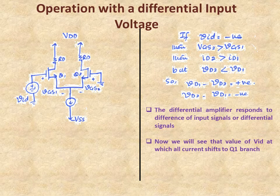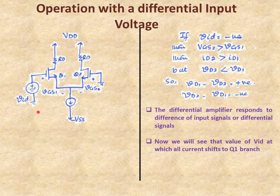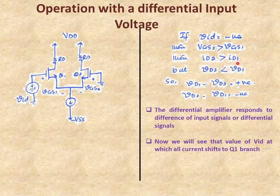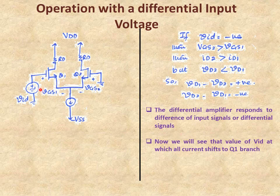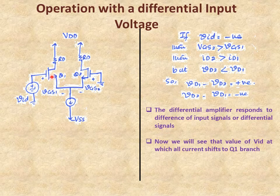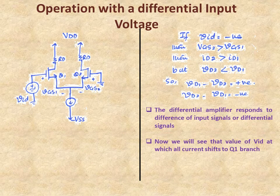Now we want to find the value of VID such that all current switches to Q1, making Q2 off. We want to find what value of VID draws all current I into Q1's branch, and what value switches all current to Q2 making Q1 off.